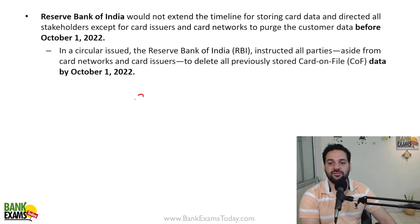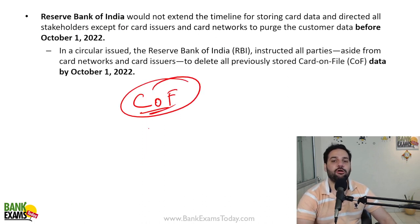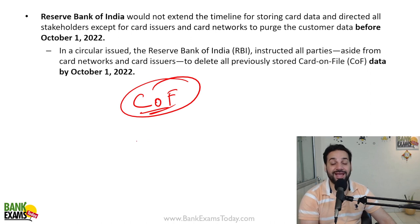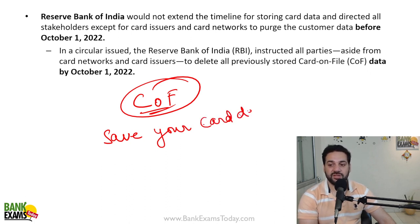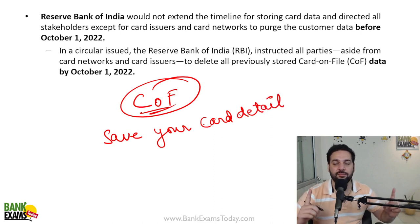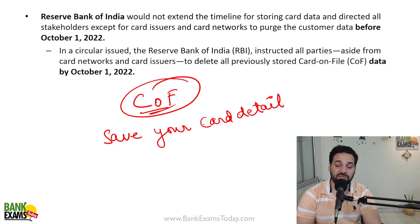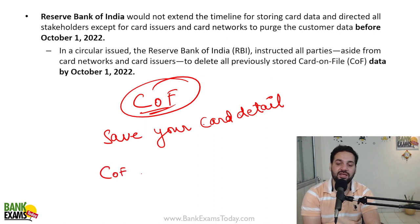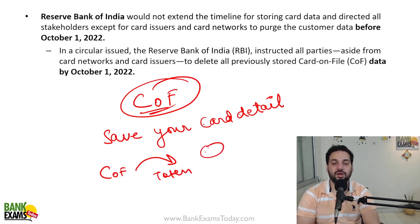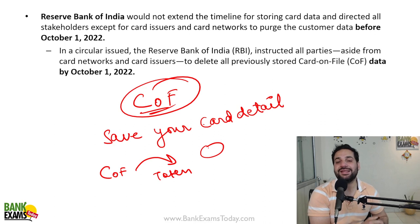This is a very important concept: Card on File, or COF. When you make a payment online — on Amazon, Flipkart, Zomato, or Swiggy — they save your card details: card number, full name, expiry date. According to RBI, this is not safe. RBI says you need to encrypt it and save a token instead. Mastercard and Visa need to save it in encrypted token format, not as direct card numbers.